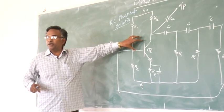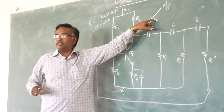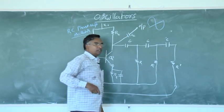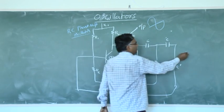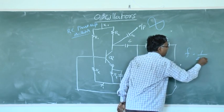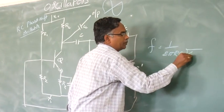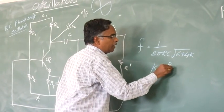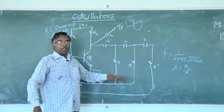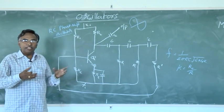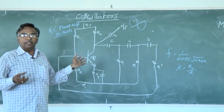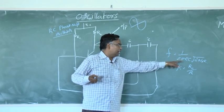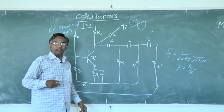The CE amplifier, via a coupling capacitor, produces a sinusoidal output signal whose frequency is given by the formula: F equals 1 divided by (2·pi·R·C·√(6 + 4K)), where K equals R_C by R. The signal produced at the output of this oscillator must have a frequency equal to 1 by (2·pi·R·C·√(6 + 4K)), where K equals R_C by R is a constant value. Thank you.